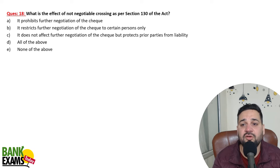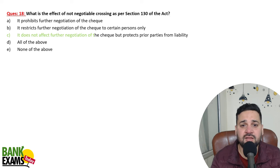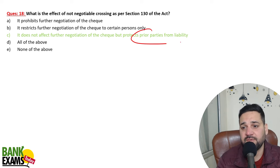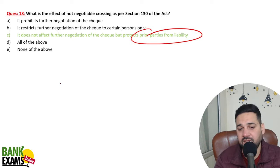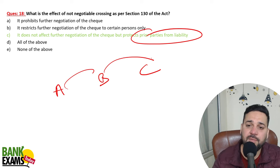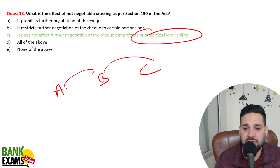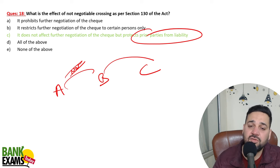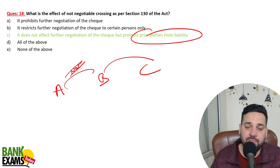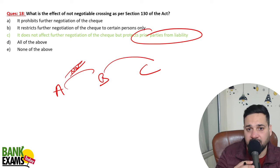What is the effect of not-negotiable crossing as per Section 130? It does not prevent the further negotiation of the cheque, but it protects prior parties from liability. For example, if A gives a cheque to B with 'not negotiable' written on it, A is limiting his own liability — whoever takes it with a defective title cannot get a better title than the transferor.